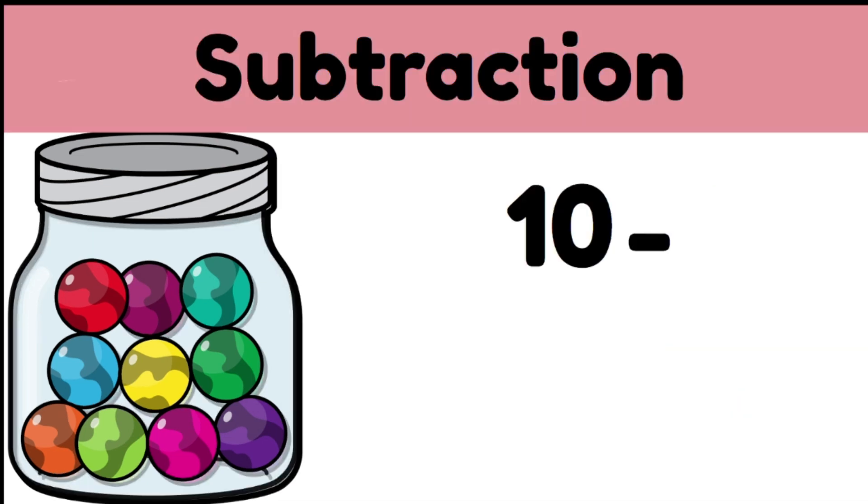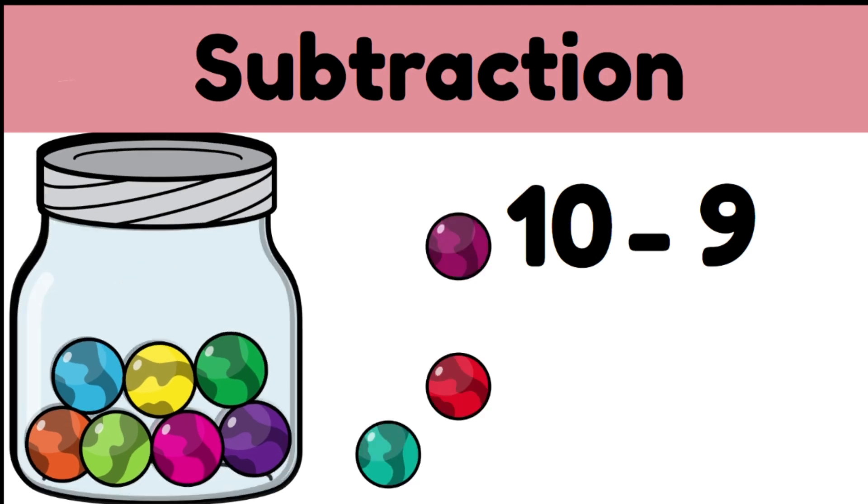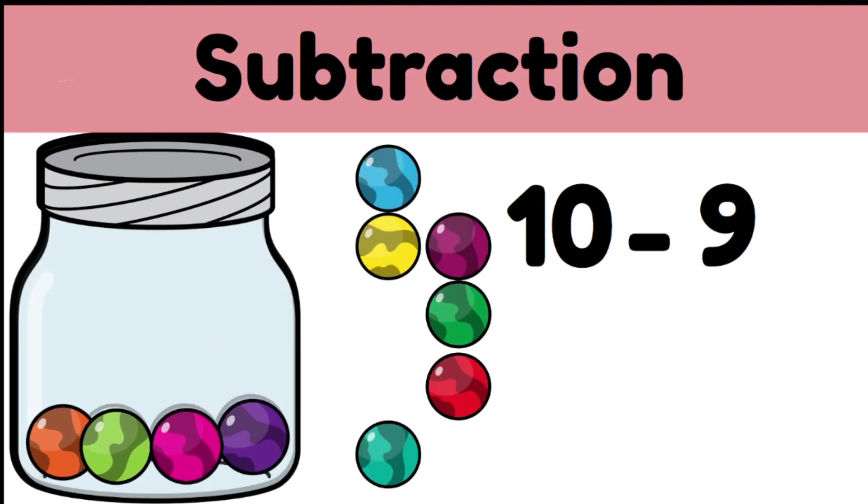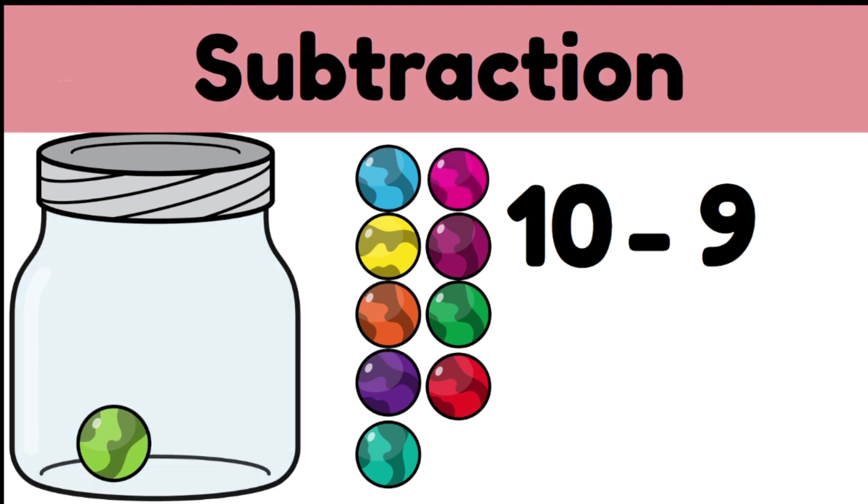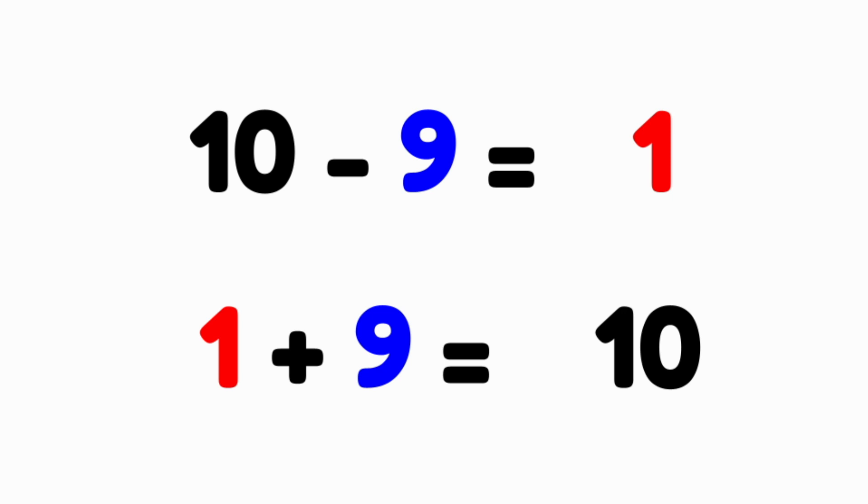Now let's look at subtraction. We have ten marbles in the jar and we're going to take away nine marbles. The answer we get is less than what we started. We now have one marble left in the jar. Let's have a closer look at those two problems. Ten take away nine gives us one. And one plus nine gives us ten. These two number sentences are exact opposites of one another.